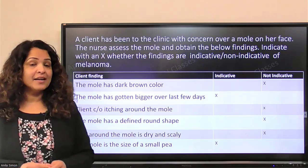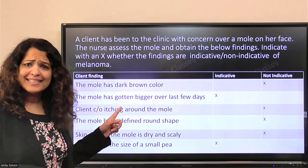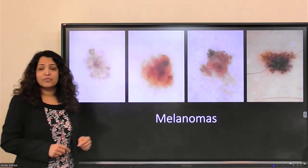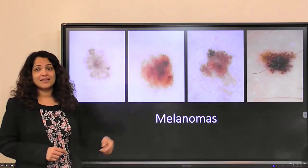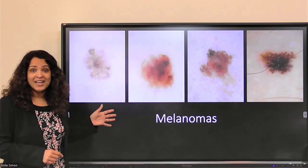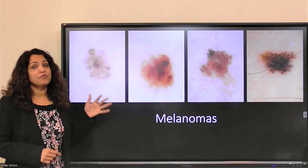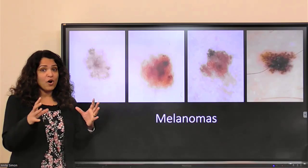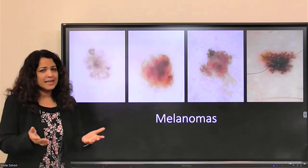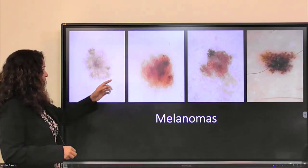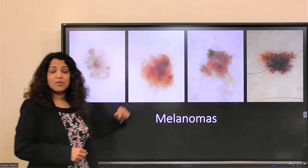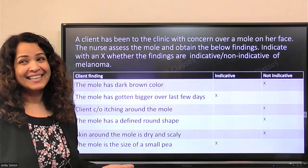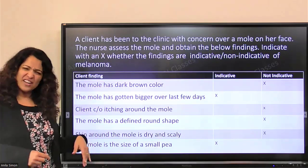The mole has dark brown color. That is not indicative of melanoma, because if you remember, melanomas are multicolor — not just one uniform color. In melanomas, if the color is uniform — just the same one — there's less chance. But if it has different colors in the same mole, that's probably melanoma. Here it says just dark brown, which means just one color, so we're going to say it's not indicative.